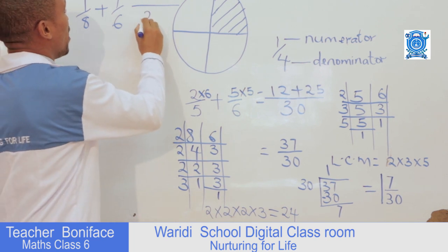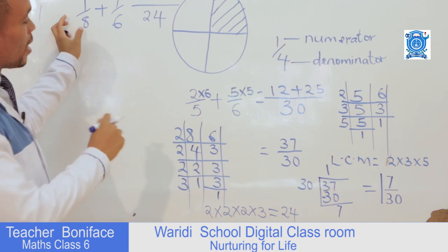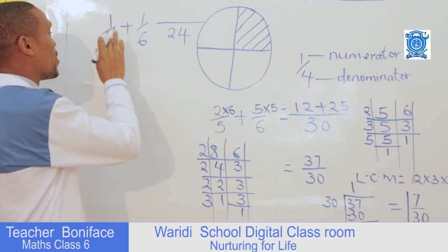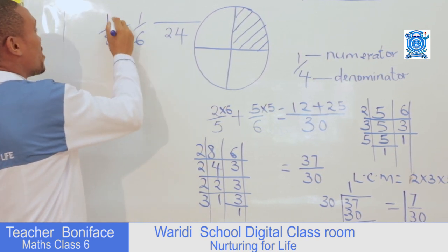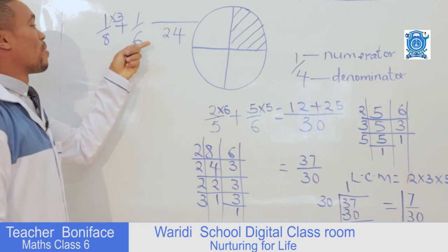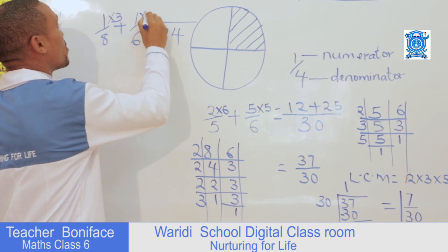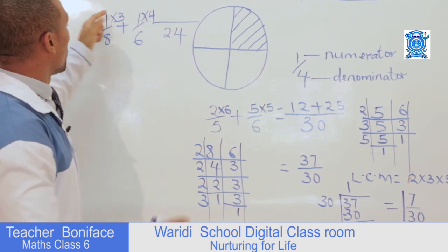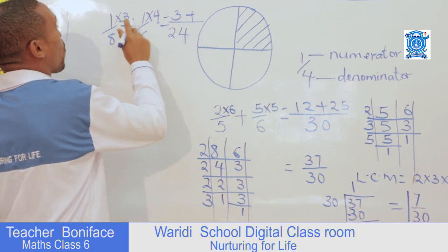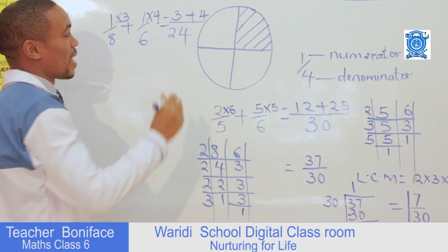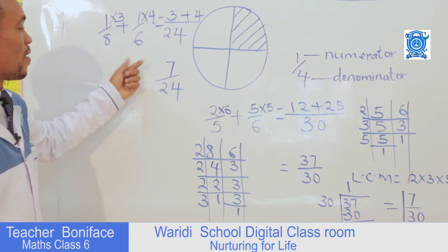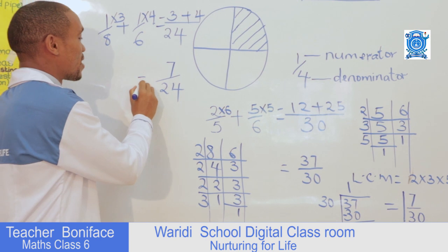So we can go back now to our calculations. How many times does eight go into twenty-four? That is three — multiply the numerator by three. How many times does six go into twenty-four? That is four — multiply the numerator by four. So: one multiplied by three is three, plus one multiplied by four is four. Three plus four is seven. So our answer is seven over twenty-four. We can't simplify further, so our answer remains seven over twenty-four.